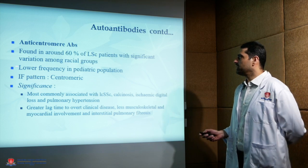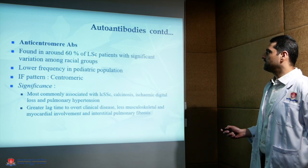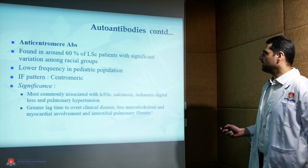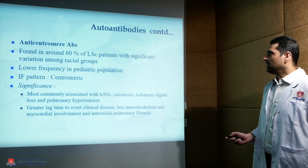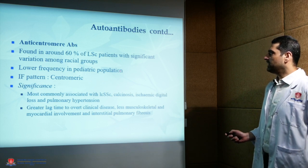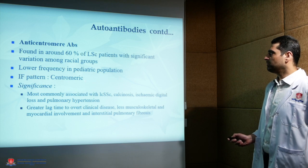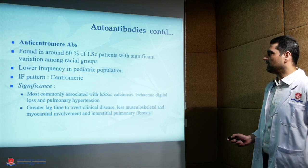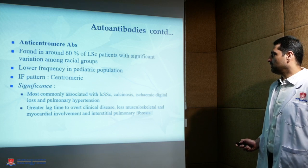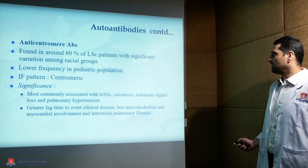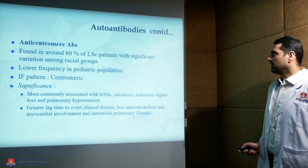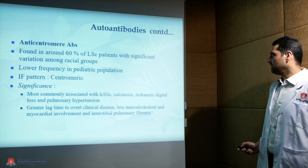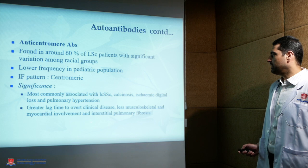Anti-centromere antibodies are found in around 60% of the limited cutaneous variant, with significant variation among racial groups. Very low frequency is seen in the pediatric population, and the immunofluorescence pattern is centromeric. This antibody is most commonly associated with the localized variant, calcinosis, digital loss, and pulmonary arterial hypertension. Greater lag time to overt clinical disease is seen, with less musculoskeletal, myocardial, and interstitial pulmonary fibrosis involvement.